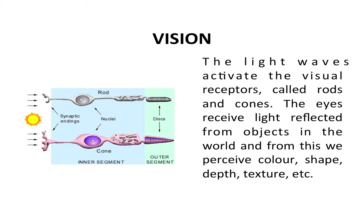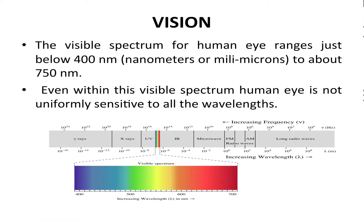The eye receives light reflected from objects in the world, and from this we perceive color, shape, depth, texture, etc. The visible spectrum for the human eye ranges from just below 400 nanometers to about 750 nanometers. Even within this visible spectrum, the human eye is not uniformly sensitive to all wavelengths.